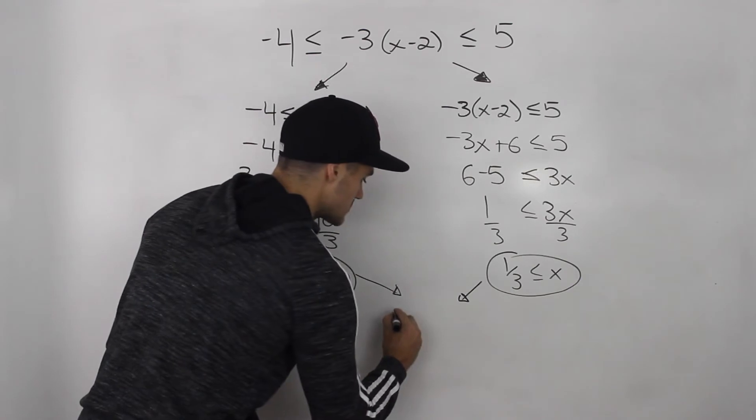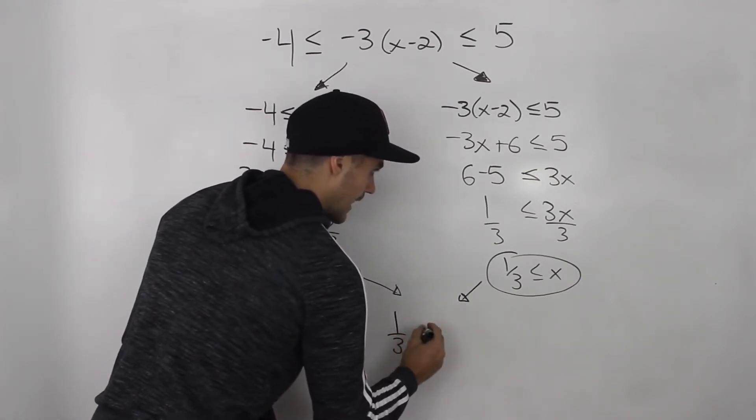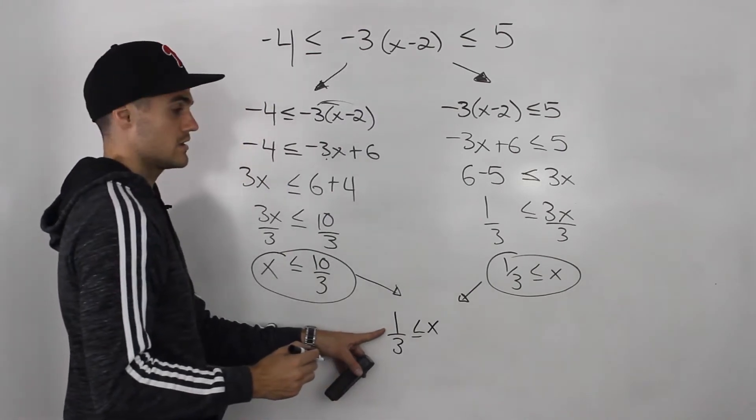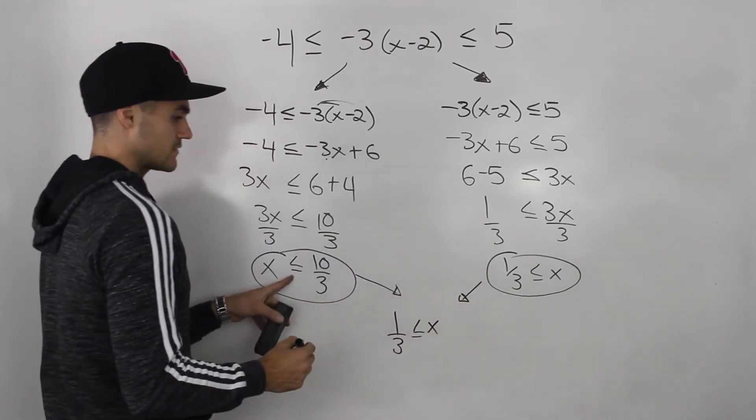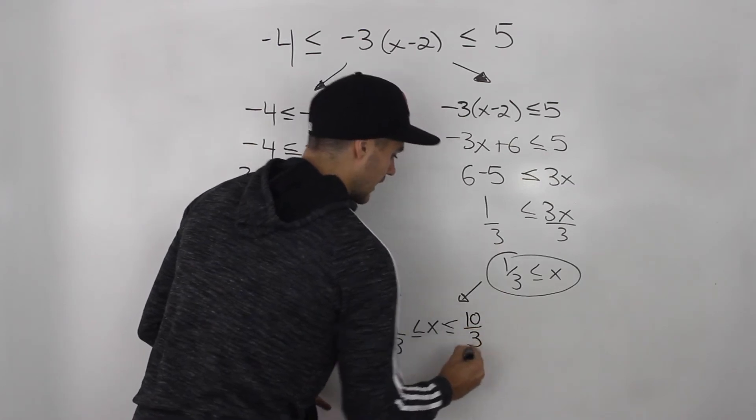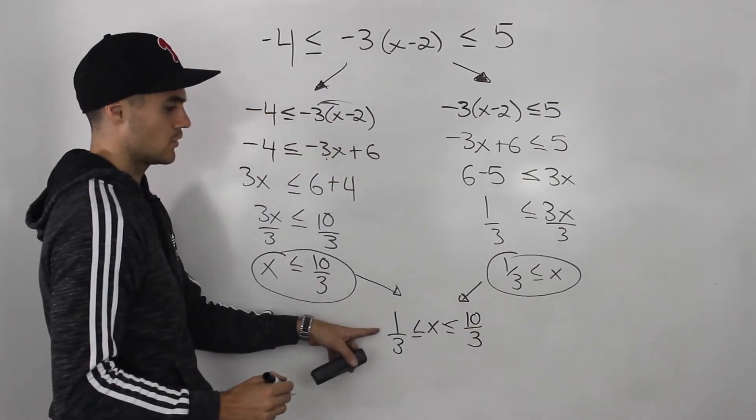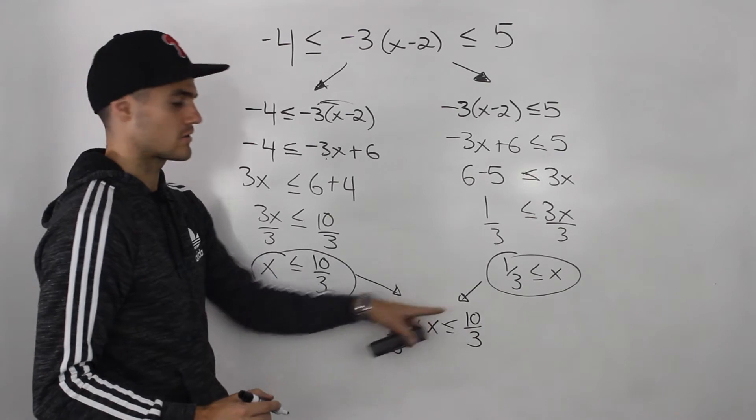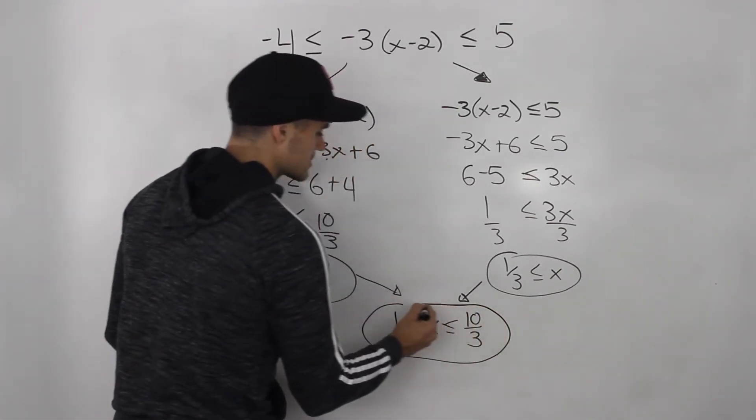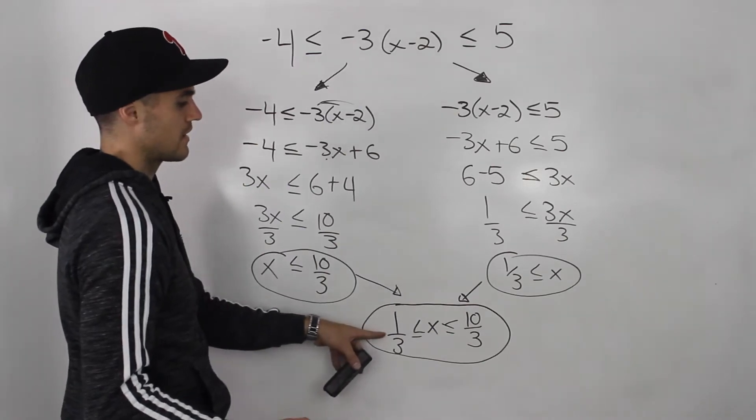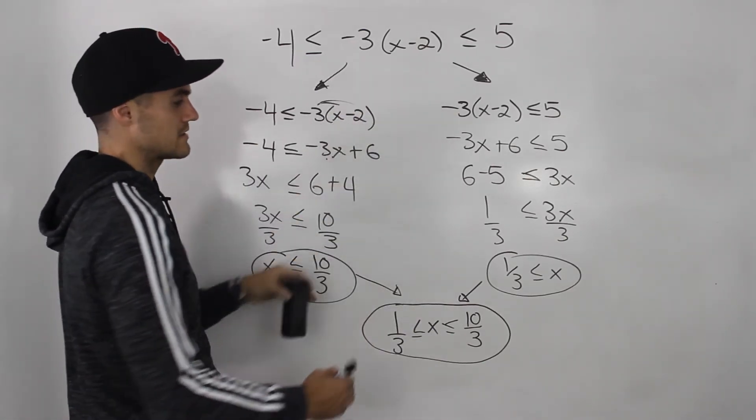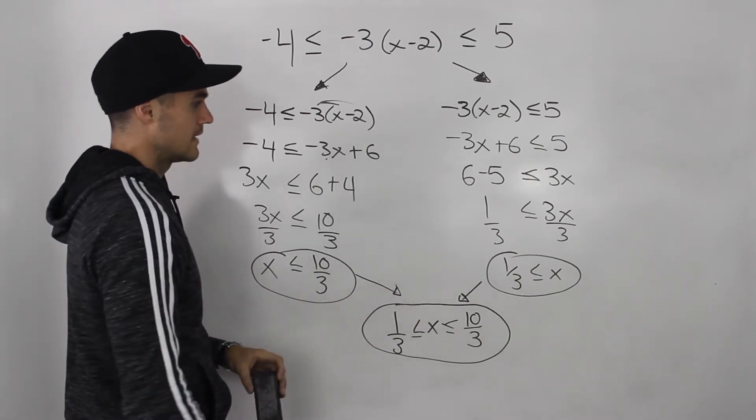Because the x values have to be greater than or equal to 1 over 3, but they have to be less than or equal to 10 over 3. And notice how that makes sense because 1 over 3 is less than or equal to 10 over 3. So this here is a valid solution, and that is the solution to this double inequality here. We basically combine these.